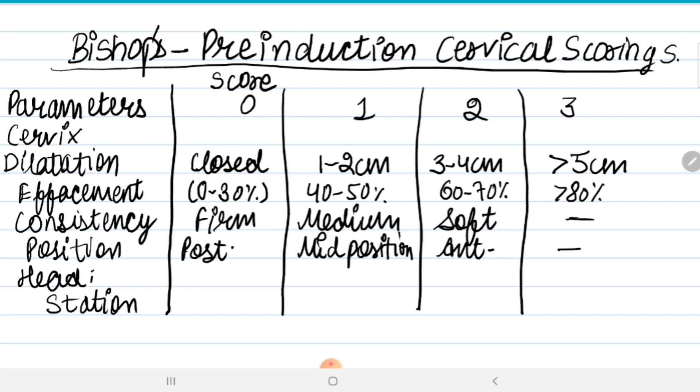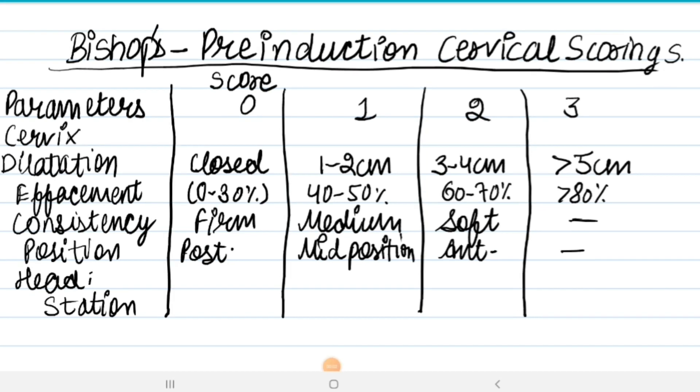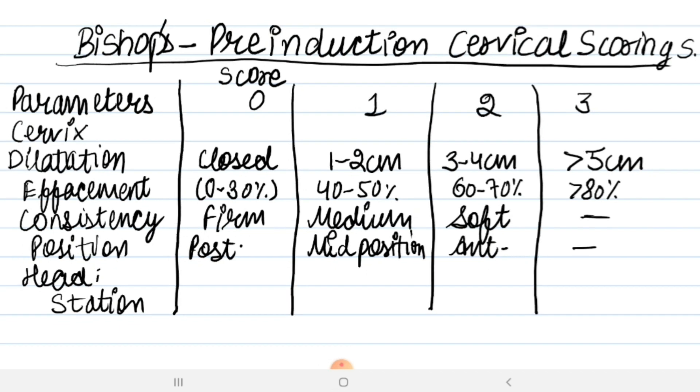Next is head station. In head station, as the fetal head makes its descent, the station changes from minus 3, minus 2, plus 1, plus 2, plus 3. If the head station is minus 3, the score is 0. If the head station is minus 2, the score is plus 1. If the head station is minus 1 or 0, the score is 2. And if the head station is plus 1 or plus 2, the score is 3.